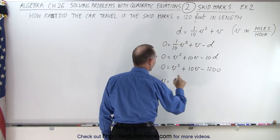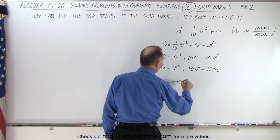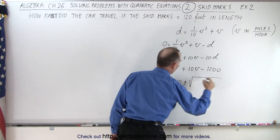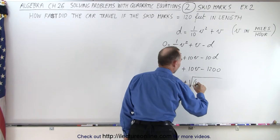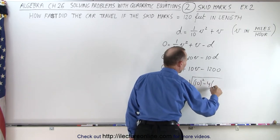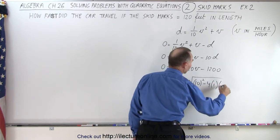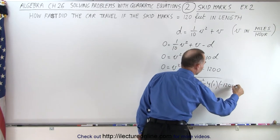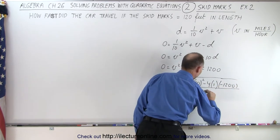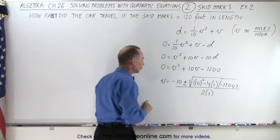So we could say that v is equal to -b which is -10 plus or minus the square root of b² which is 10² minus 4 times a which is 1 times c which is -1200. And the whole thing divided by 2 times a. And a is 1.